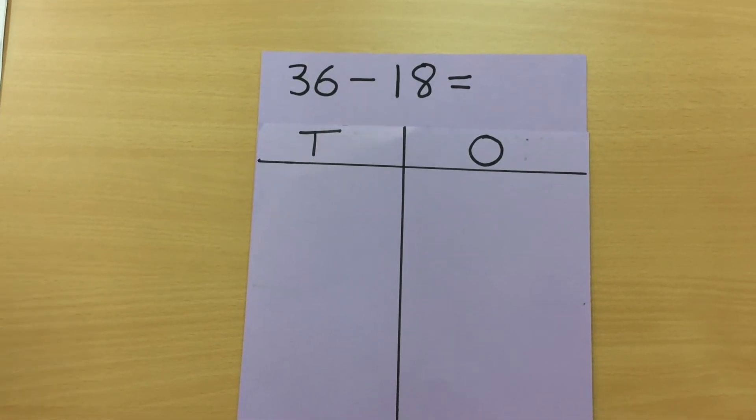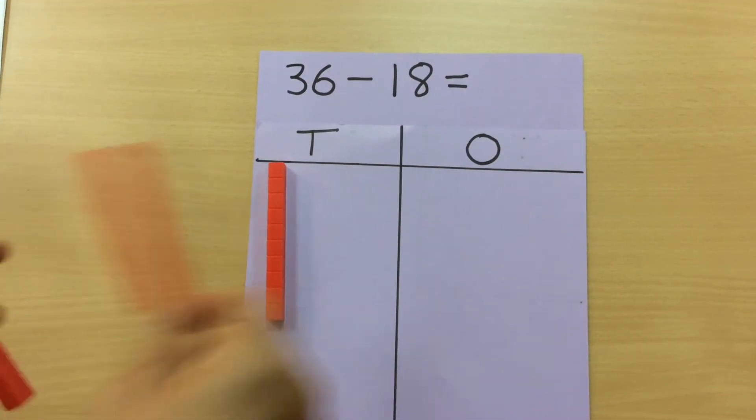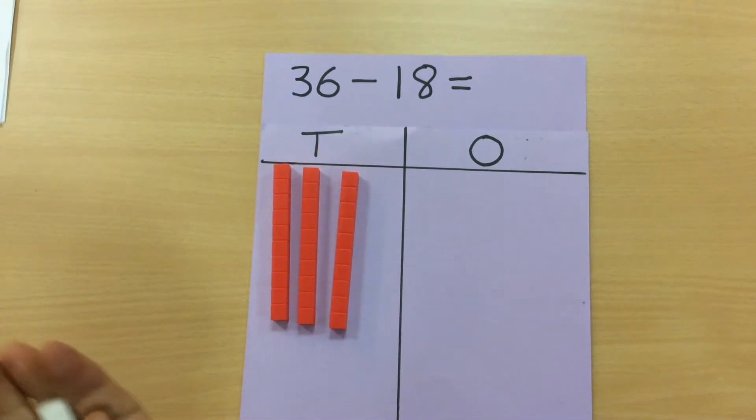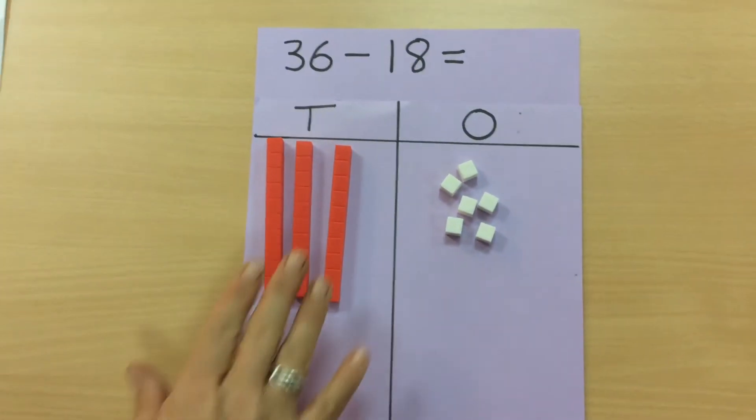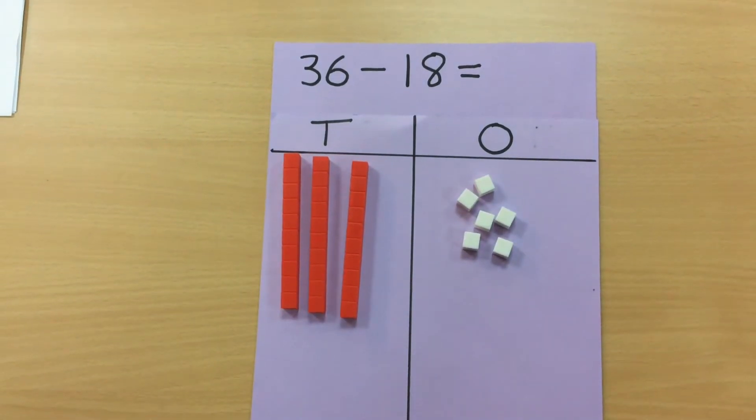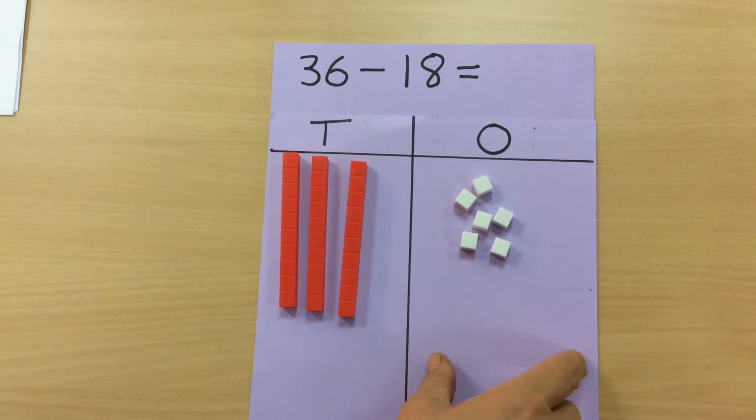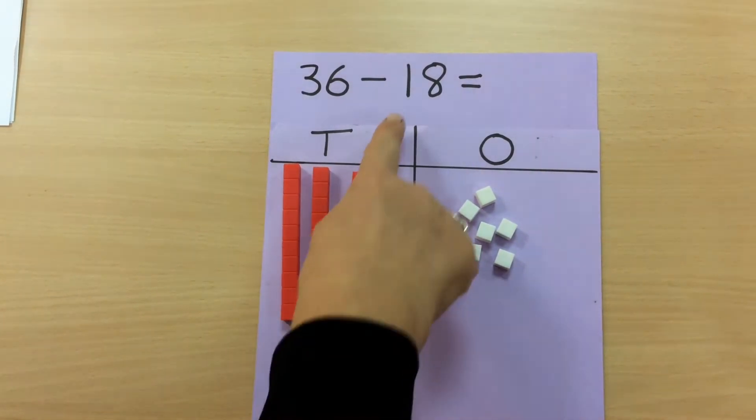So let me talk you through this. We're still starting with 36, so we have one, two, three tens for our 30 and six ones. So we have our 36, and they always need to start with the ones column first.